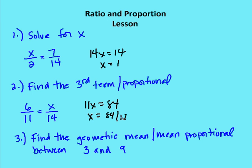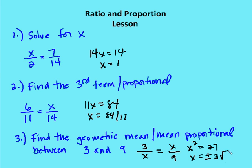Next, find the geometric mean — or mean proportional — between 3 and 9. We write the proportion as 3 over x equals x over 9, where x represents the geometric mean for both middle terms. Using the means extremes product theorem, x squared equals 27. Taking the square root of both sides, and simplifying the square root of 27, we get x equals plus or minus 3 root 3. So the mean proportional between 3 and 9 is plus or minus 3 root 3.